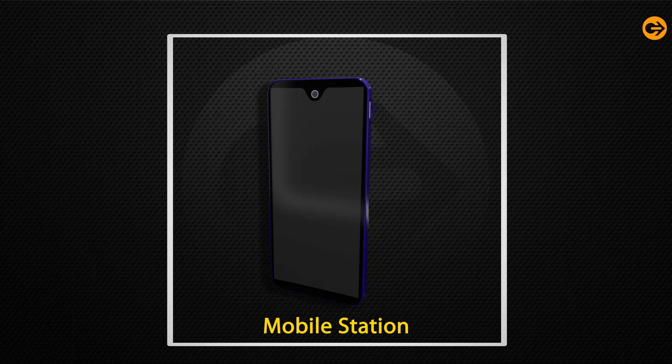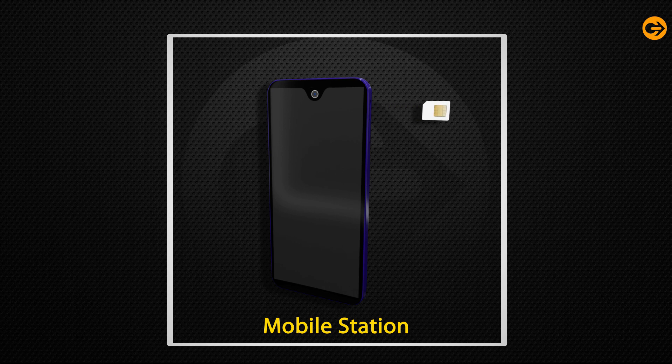The mobile station is the mobile phone that consists of a transceiver, display, and processor. It is controlled by a SIM card operator over the network.